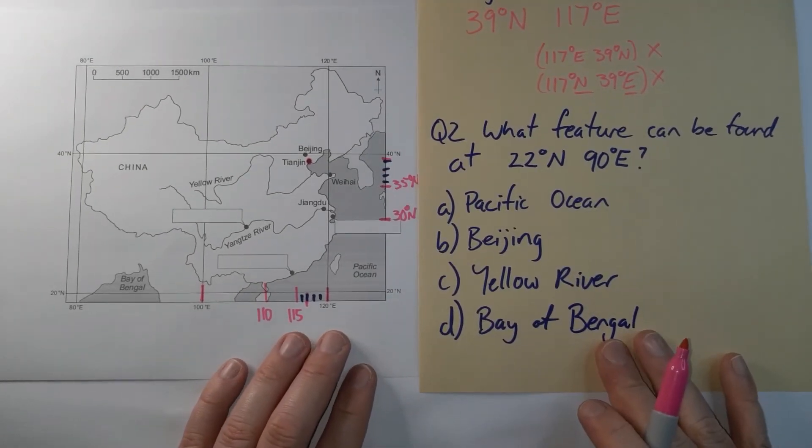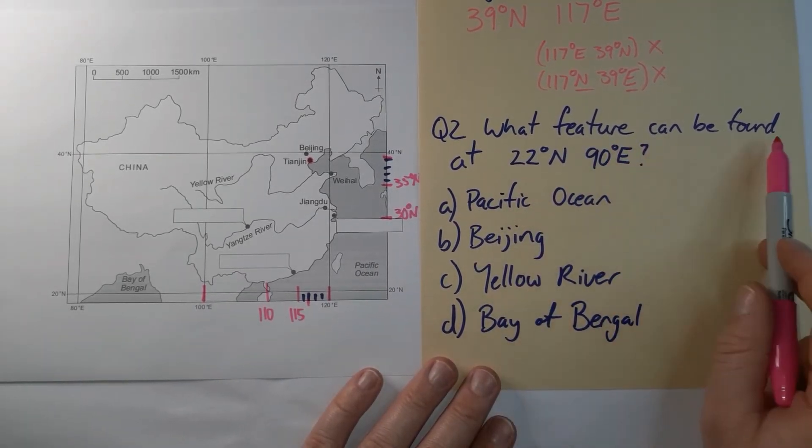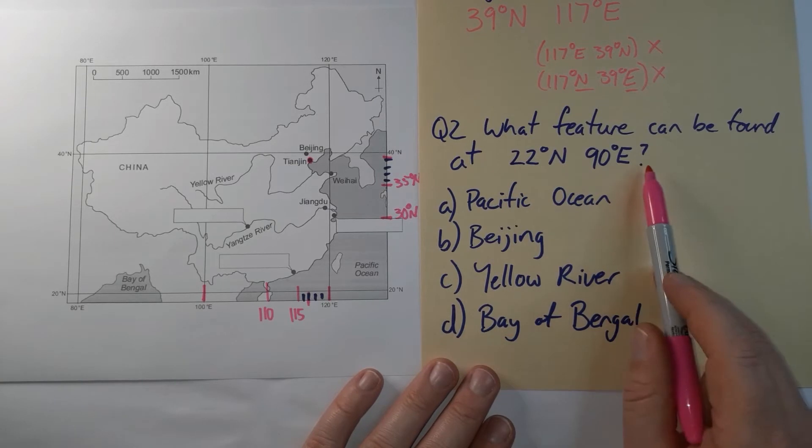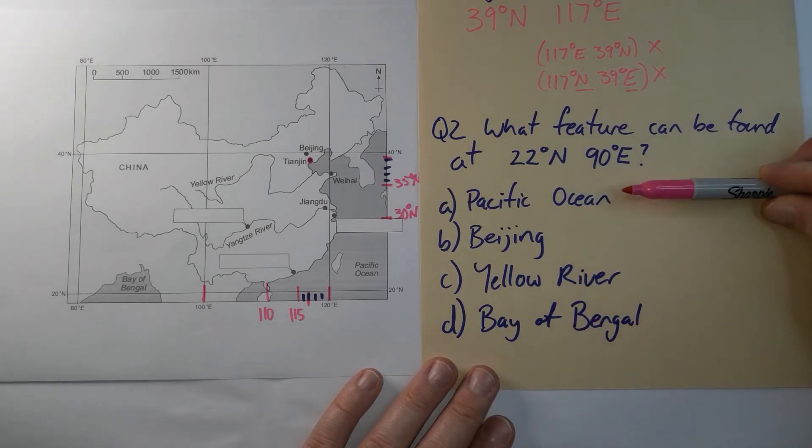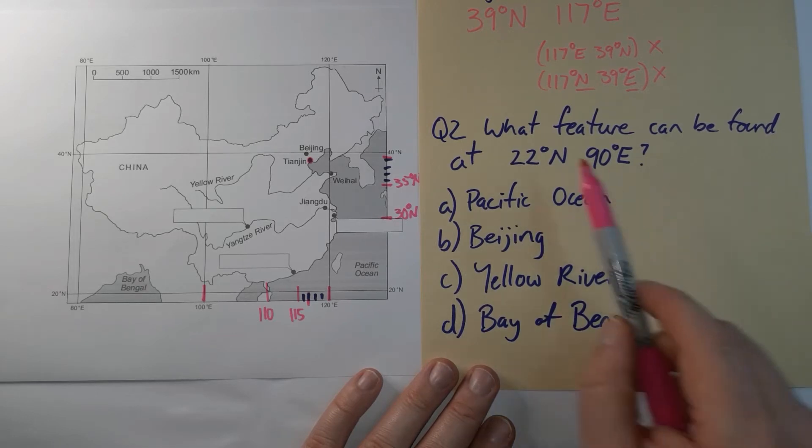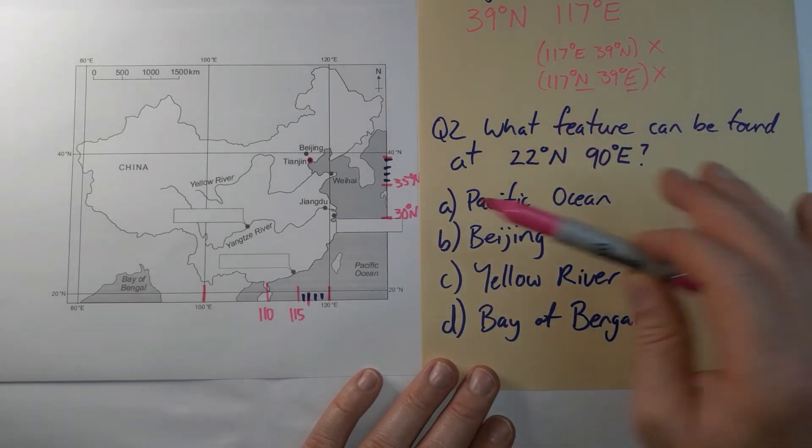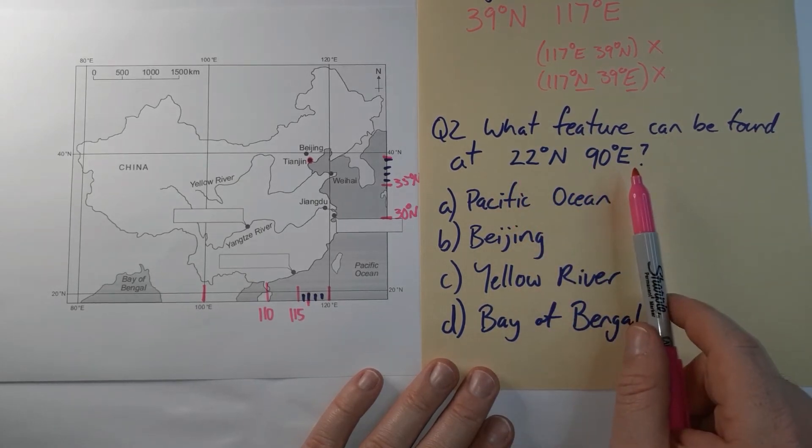Here's a multiple choice question for us to look at. What feature can be found at 22 degrees north, 90 degrees east? So we are being given the latitude and longitude here and we're going to have to narrow down and find the best answer from these four. Now in some questions if I add an extra word here we don't even have to look at the map to narrow down the answers.